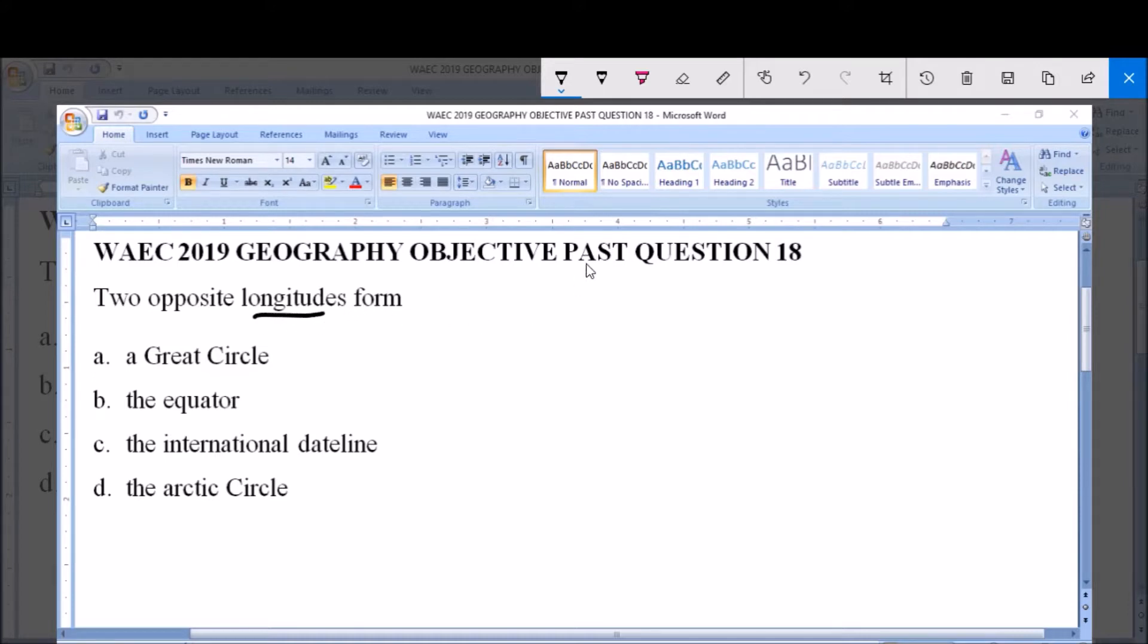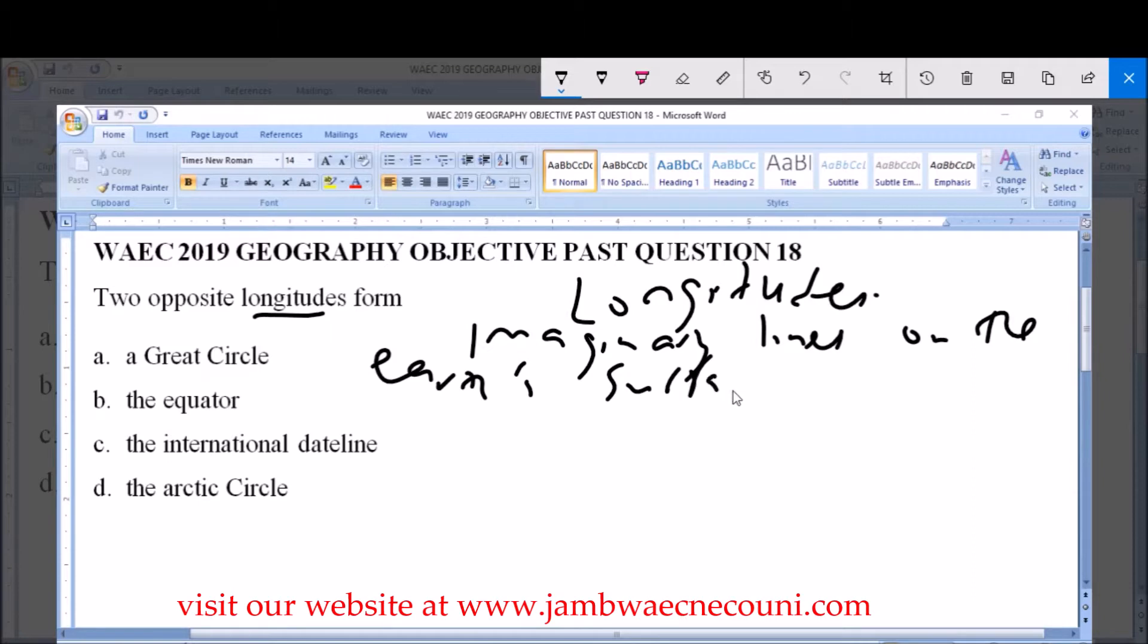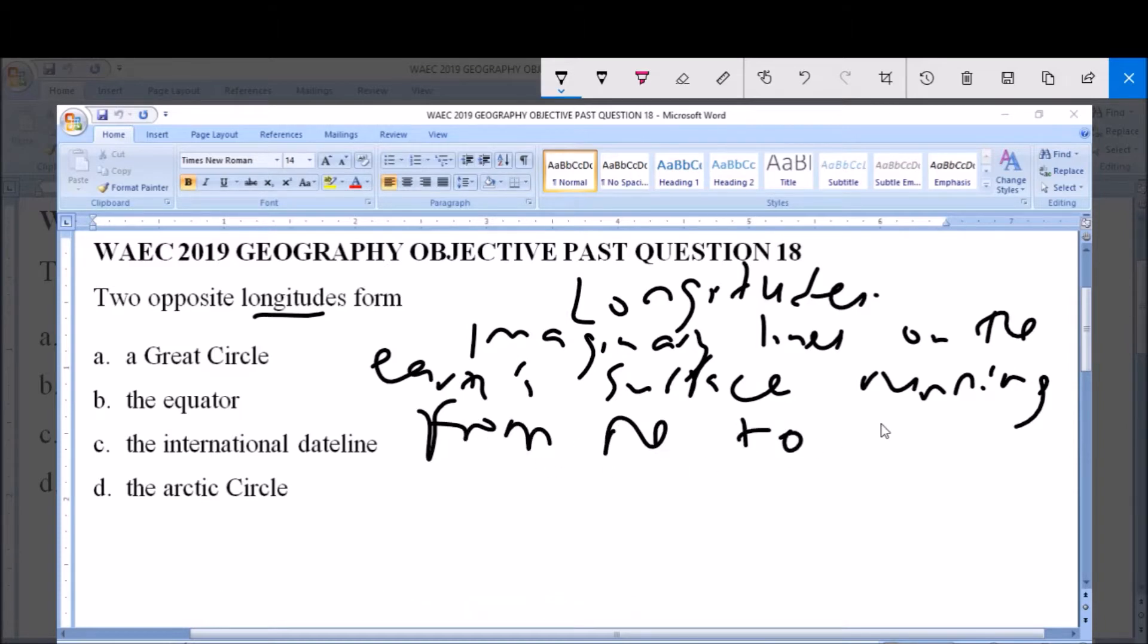So we are looking at longitudes, and remember that longitudes are imaginary lines drawn on the Earth's surface, running from north to south.